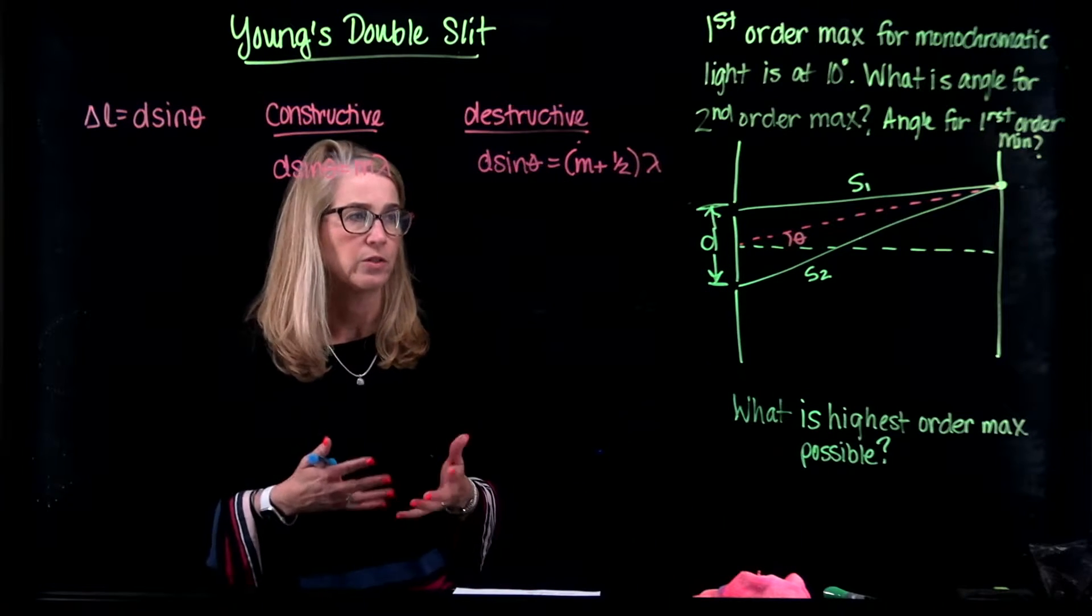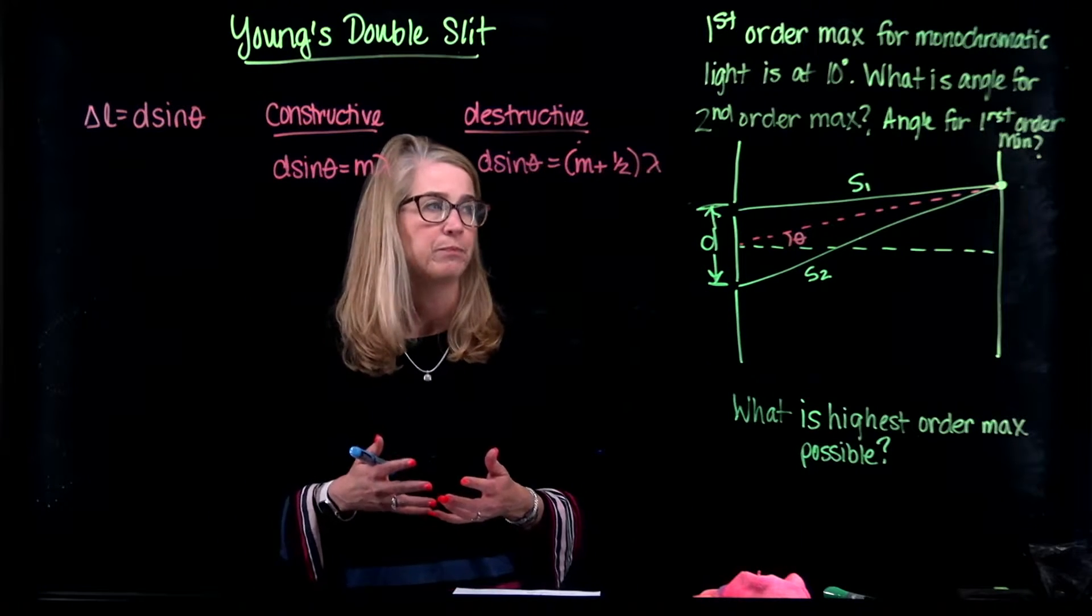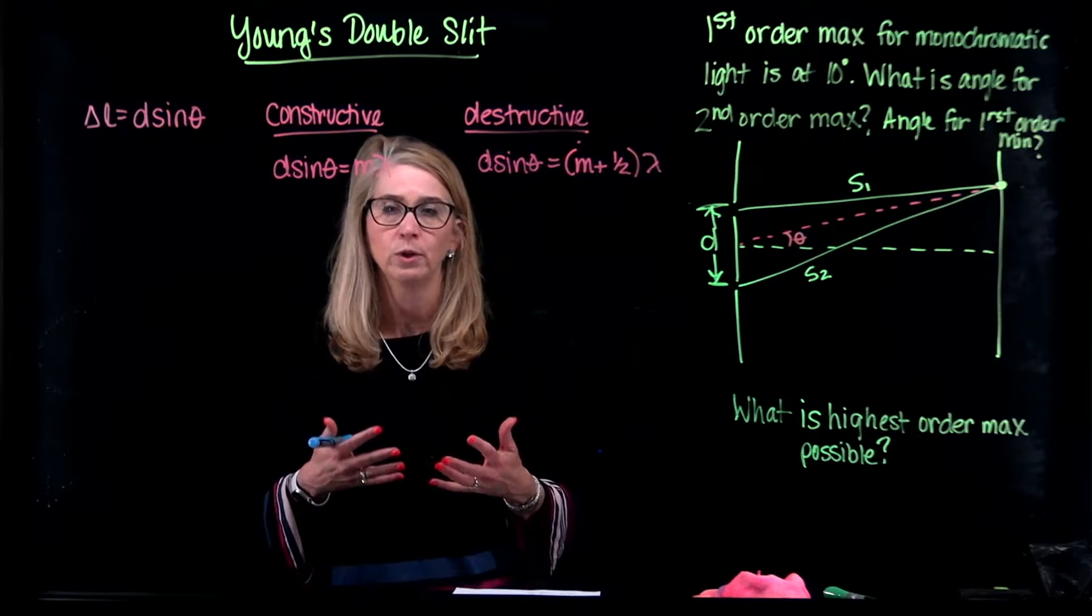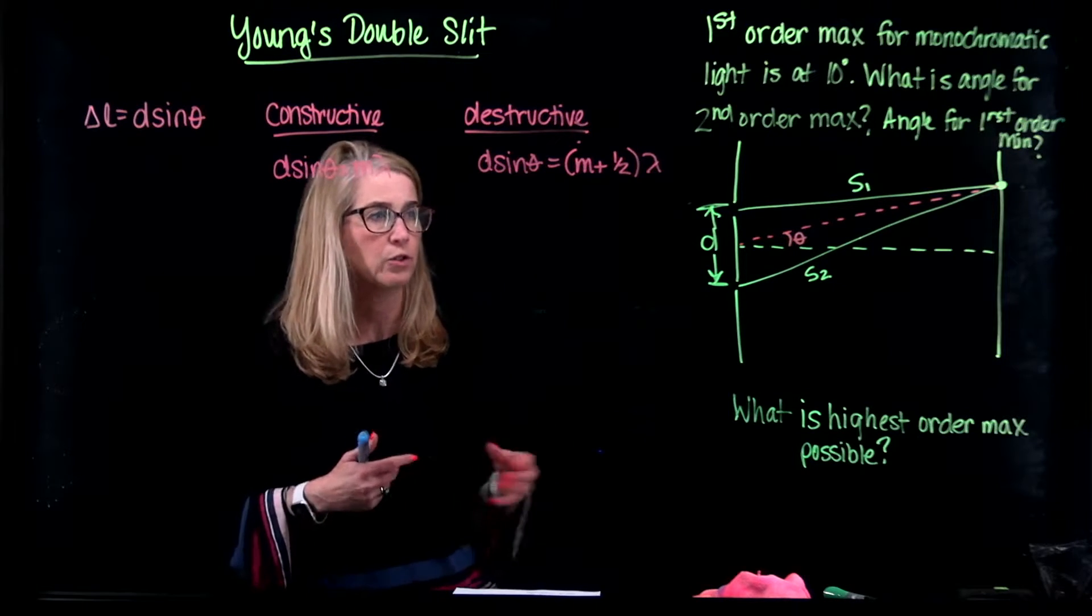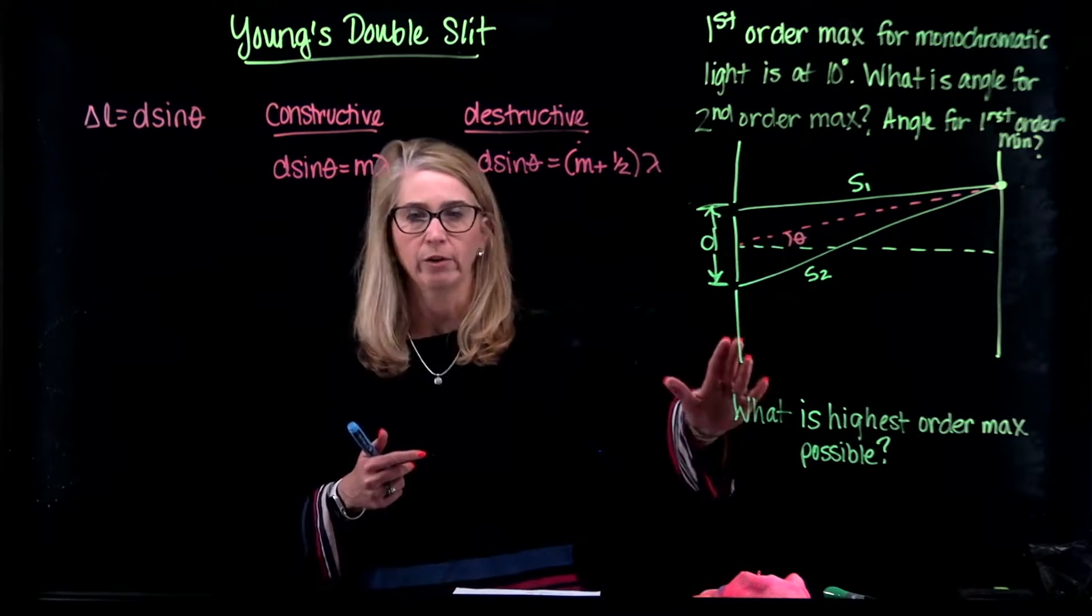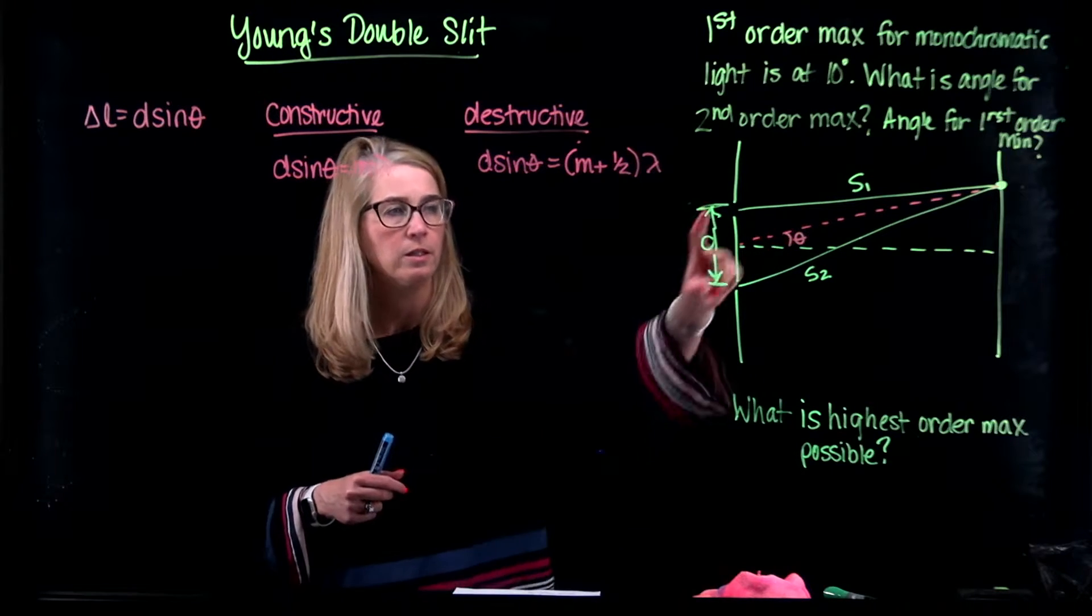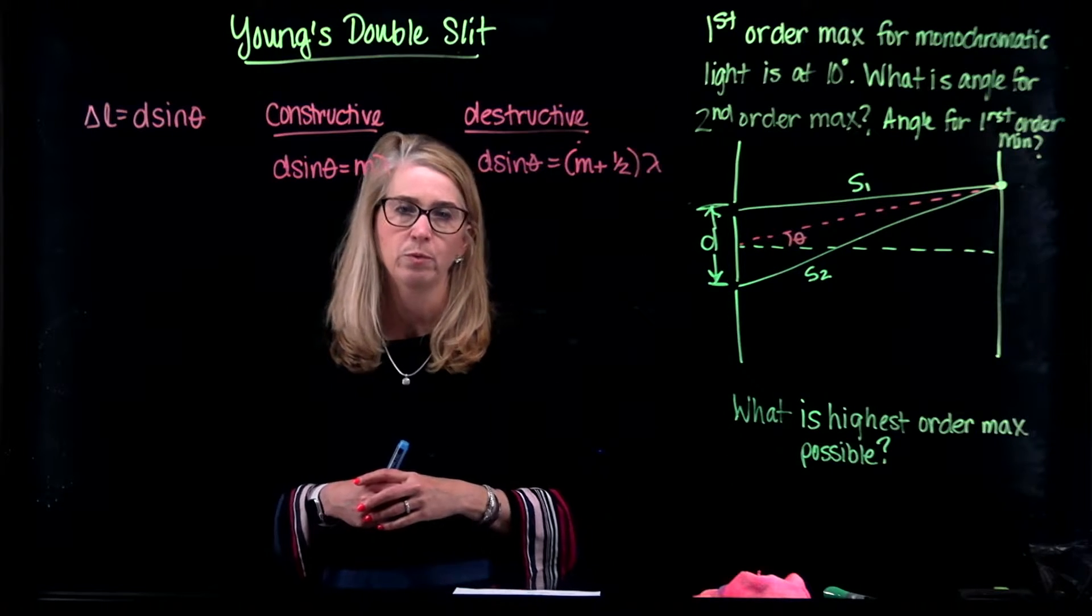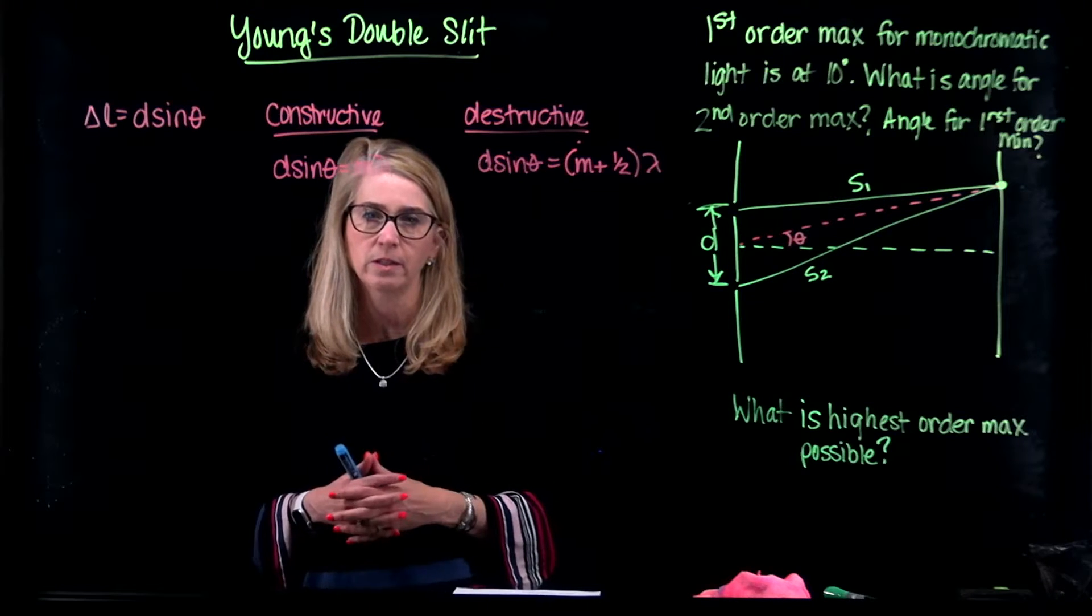Now let's take a look at a problem that does involve the double slit experiment. Remember what you learned about the double slit experiment. It starts off with a barrier with two small holes in it and the distance between the holes is important. We call that D, the slit separation.